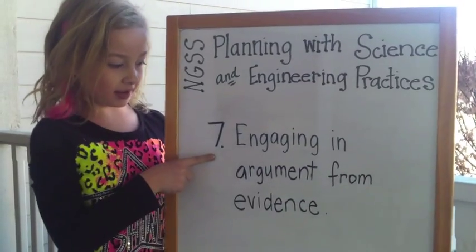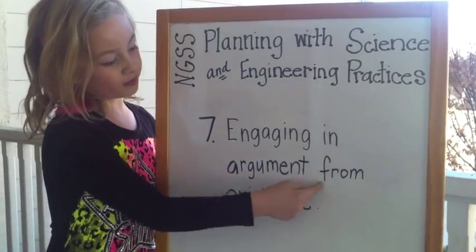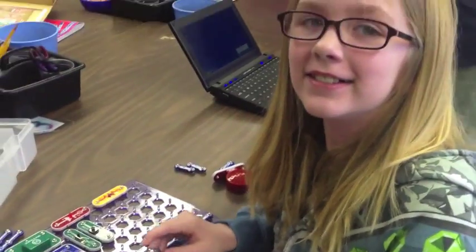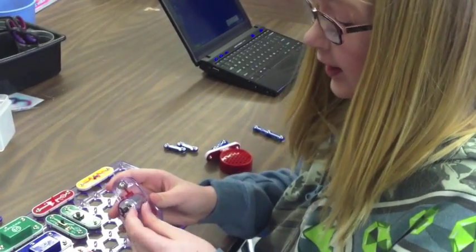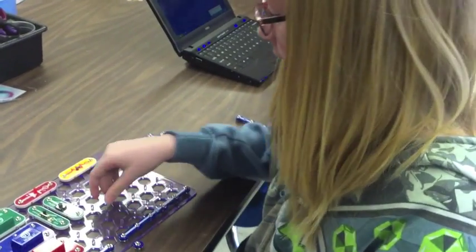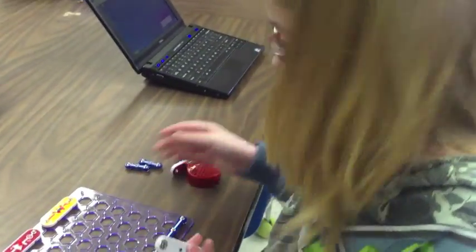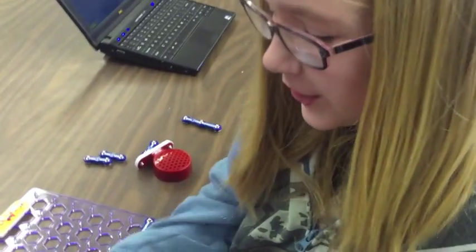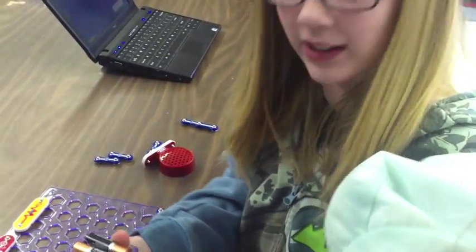Practice 7 is engaging in argument from evidence. Argument is really a process — this does not just happen, it must be planned by the teacher. This practice teaches us to be a critic and a critical thinker.